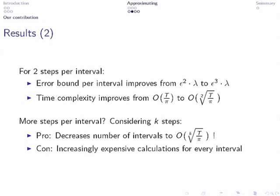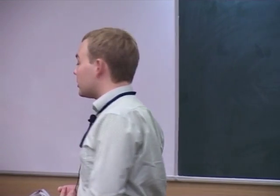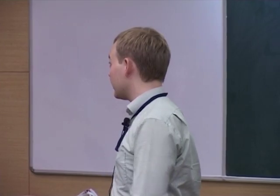And now, of course, the natural question is, can't we allow more? And indeed, we can. And this leads then to the improvement to the kth root of t over epsilon many intervals which we have to consider. However, the calculations per interval, the cost of the calculations per interval, increases dramatically once we pass a certain threshold. But we will come to that later. So first of all, I want to show you the actual impact this has on a real example, or on a small example.